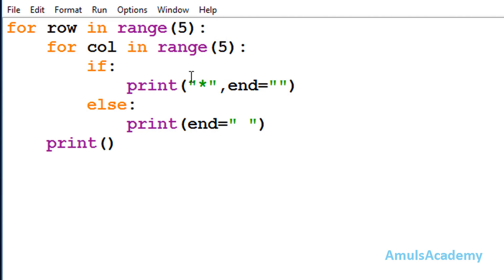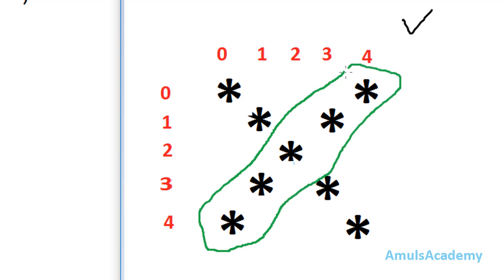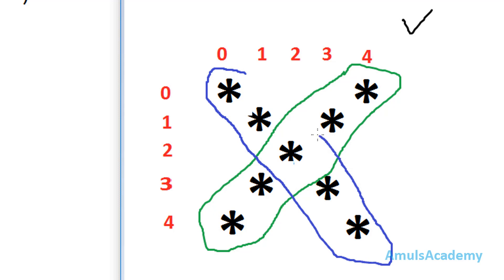Next, inside this we can see an if-else conditional statement. We want to print stars in a particular pattern — the alphabetical X shape — and for that we need a condition, that's why we are using if-else. After the if keyword I need to mention the condition: in which row and column do you want to print a star. For that we will divide our output into two parts.